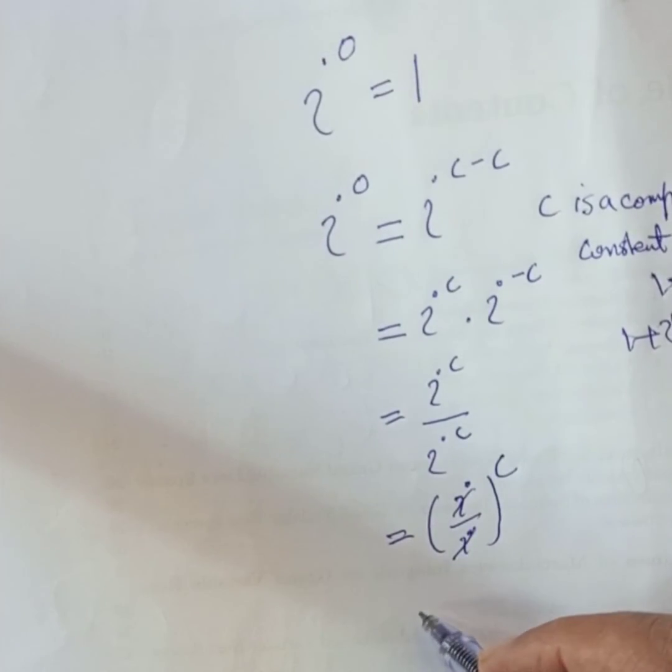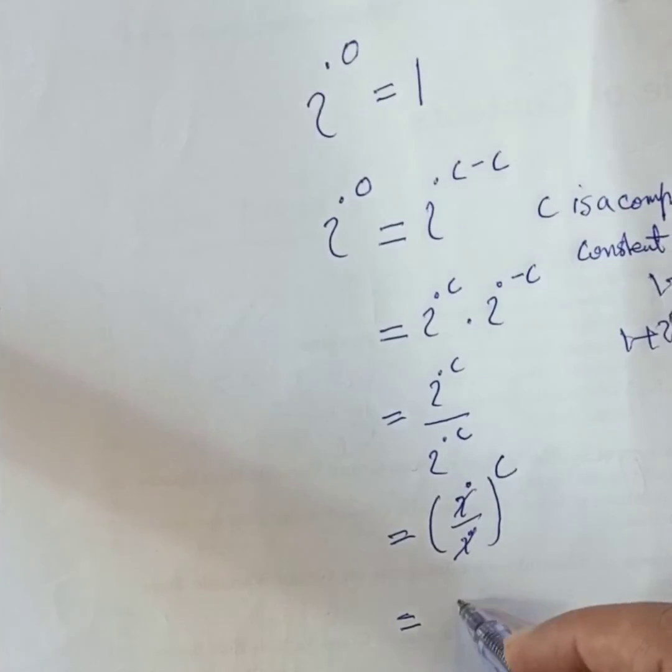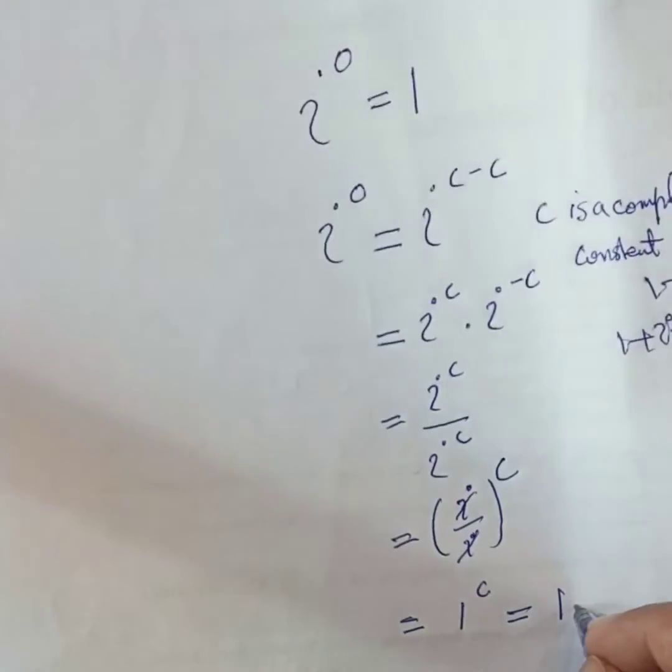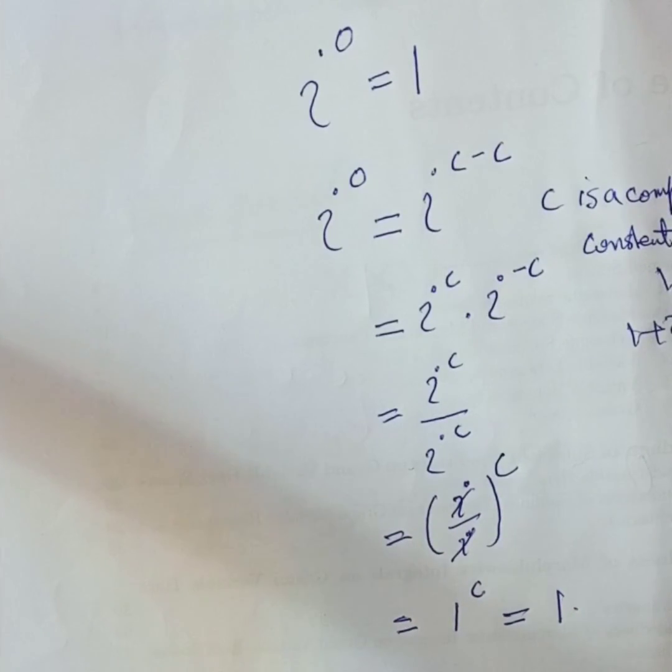And any complex number power 1 is always 1. So this is the proof of how iota power 0 is equal to 1.